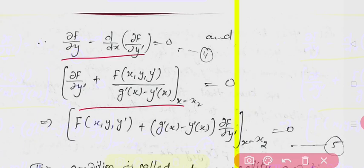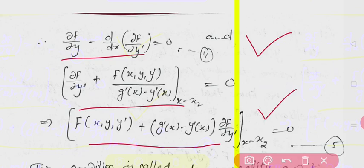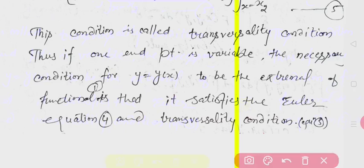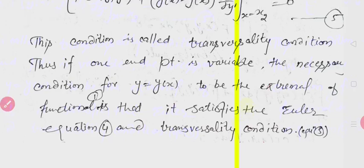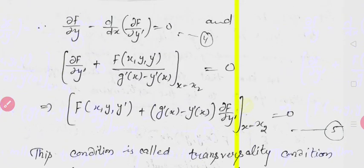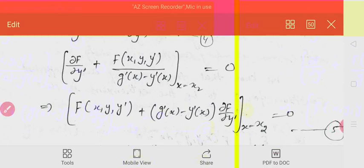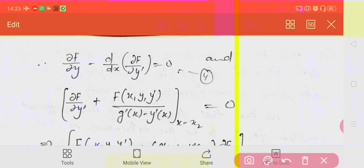Rearranging, we get: f + (g' - y') * (∂f/∂y') evaluated at x2 equals 0. So from this proof, we get the Euler equation and this condition, which we call the transversality condition.